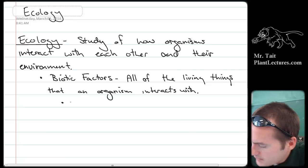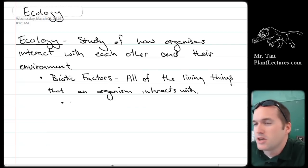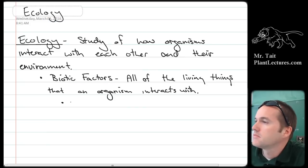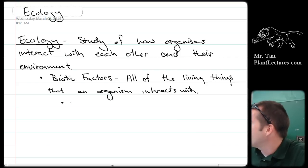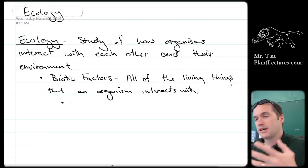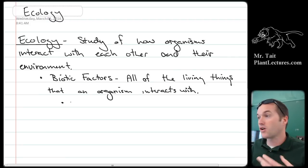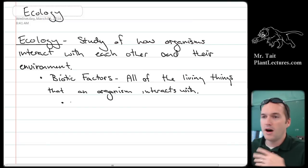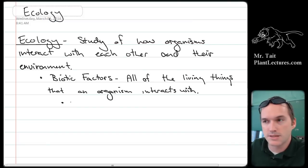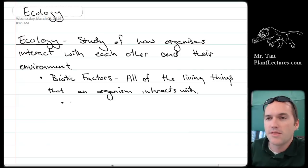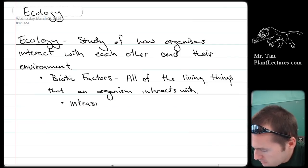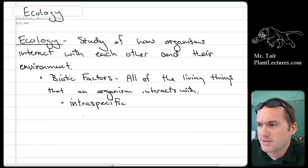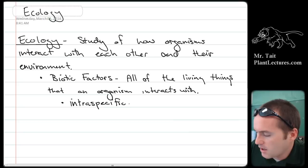Let's think about the living things — what types of living things do you interact with on a daily basis? Other humans, yes. In ecology, the important interactions we look at are things like competition for a mate or for food. When talking about interactions with other humans, the term we use is intraspecific — meaning within a species.